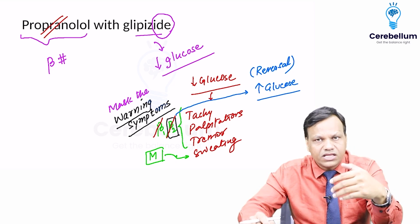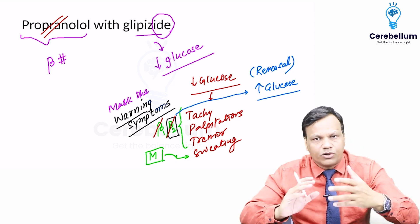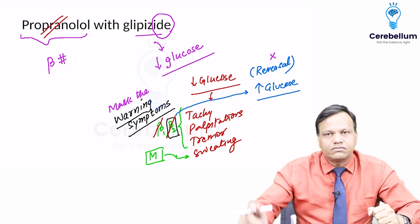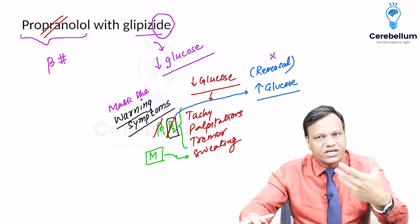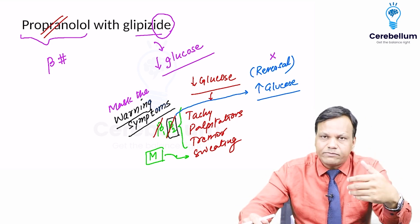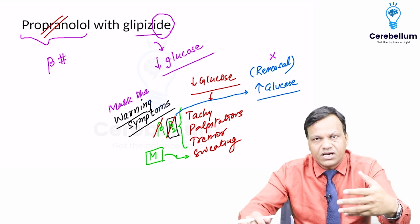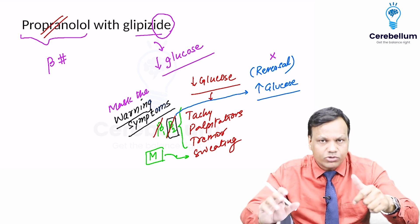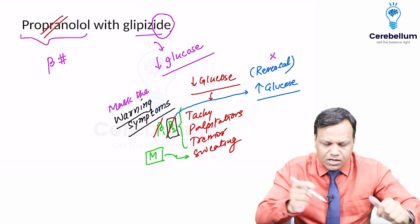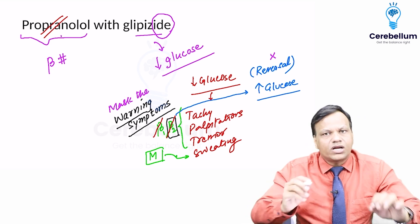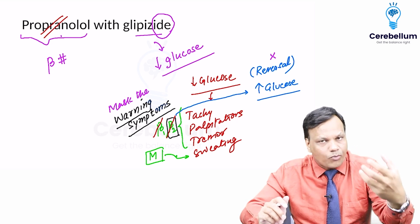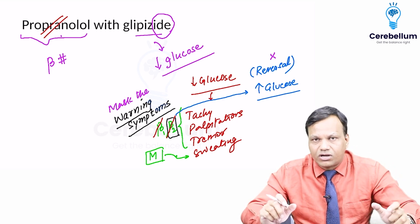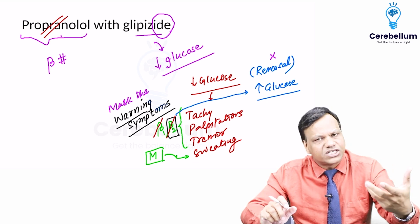Even when the person develops hypoglycemia, there will be no symptoms. Second, it will also prevent the reversal because beta-2 is also blocked. So many times, whenever a person develops hypoglycemia, they never come to know and go into a coma. Therefore, non-selective beta blockers like propranolol are contraindicated with anti-diabetic drugs, or in fact in any patient with diabetes.